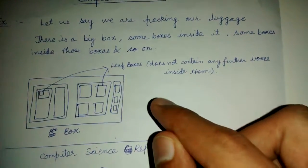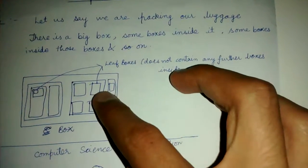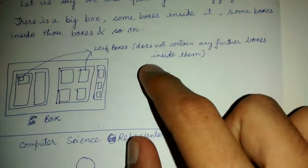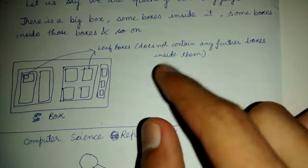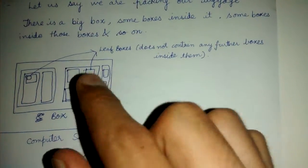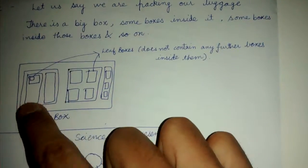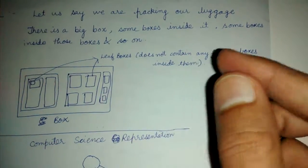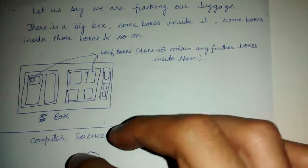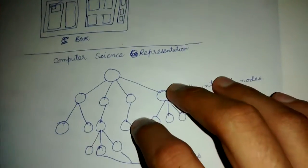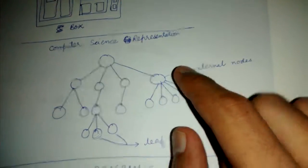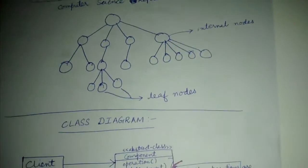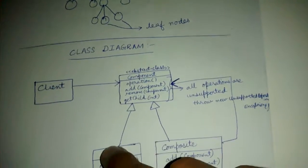Let's call the innermost boxes the leaf boxes — they do not contain any further boxes inside them. Any boxes which contain one or more boxes inside them are called internal boxes or internal nodes. This is similar to the computer science representation of a tree, where these are called internal nodes and leaf nodes.